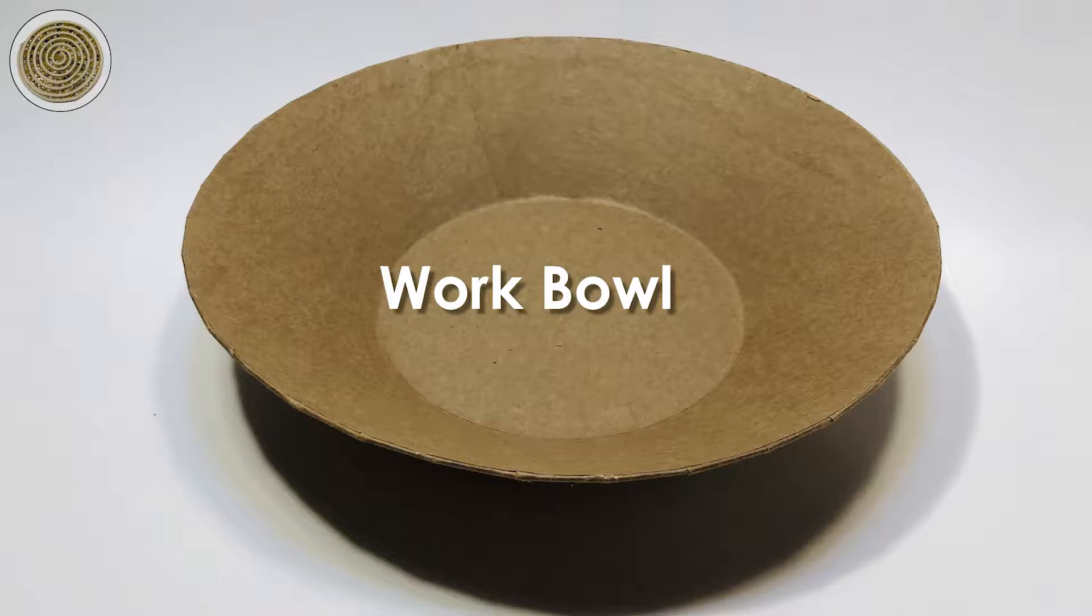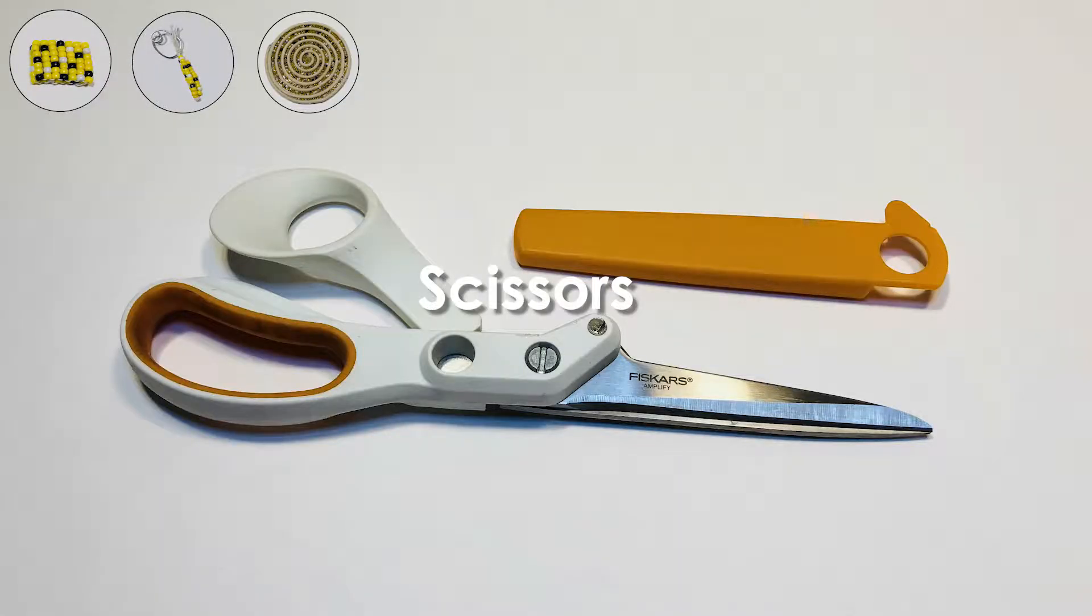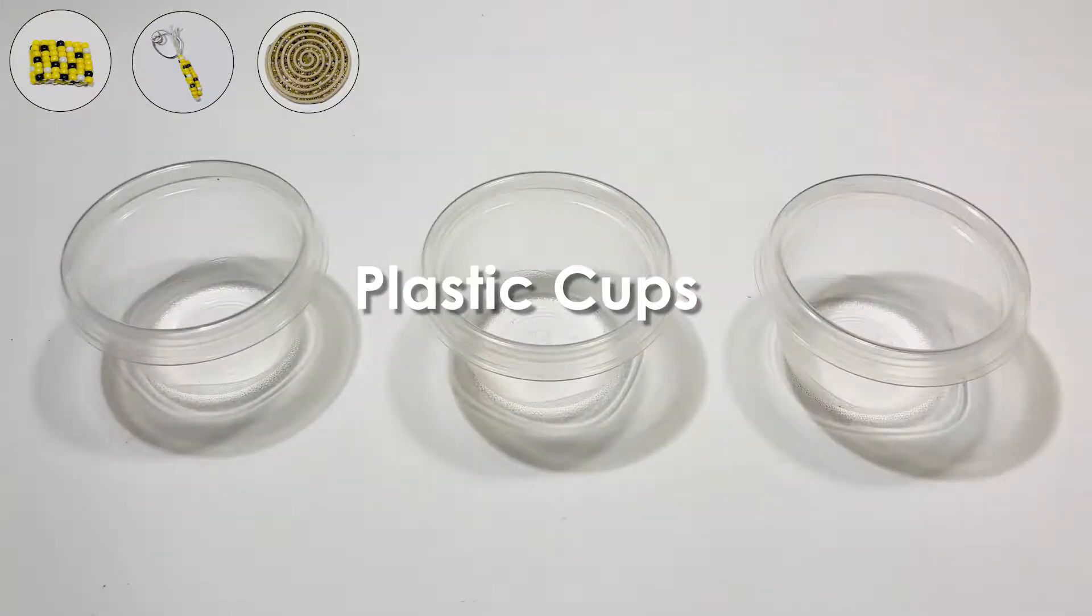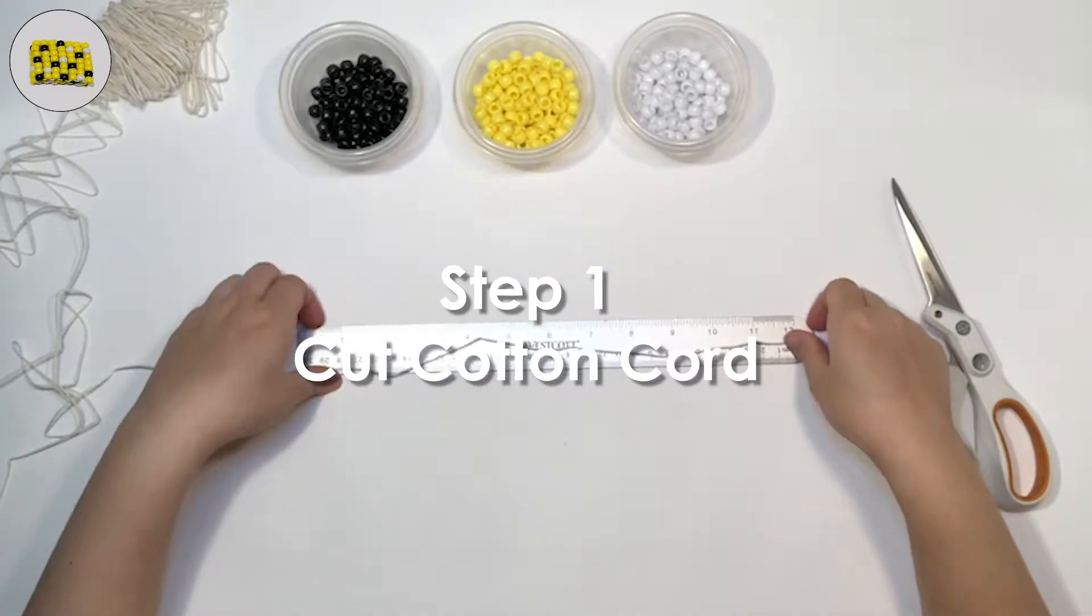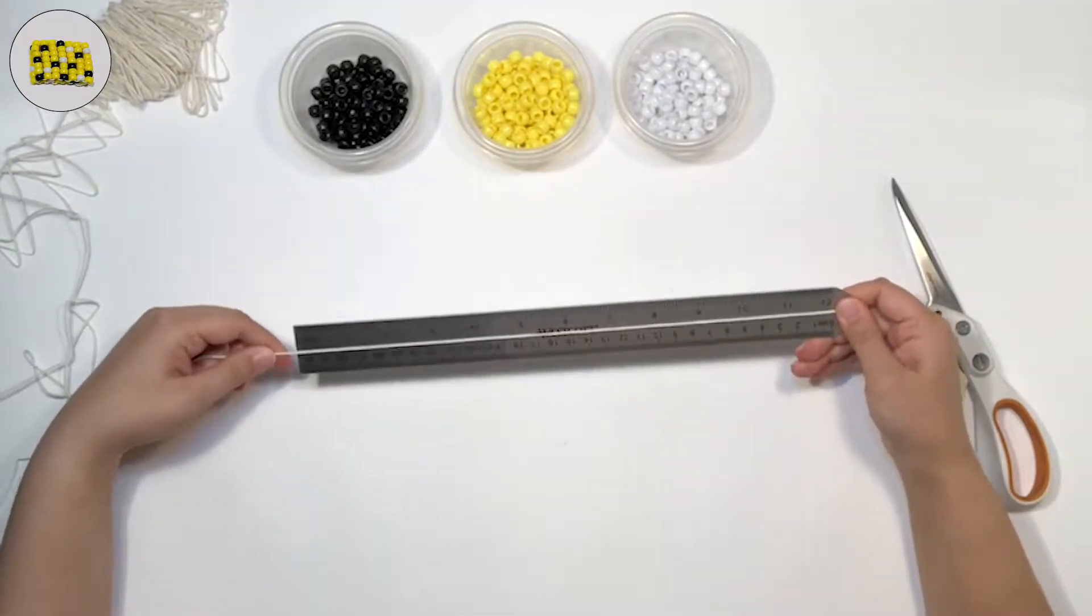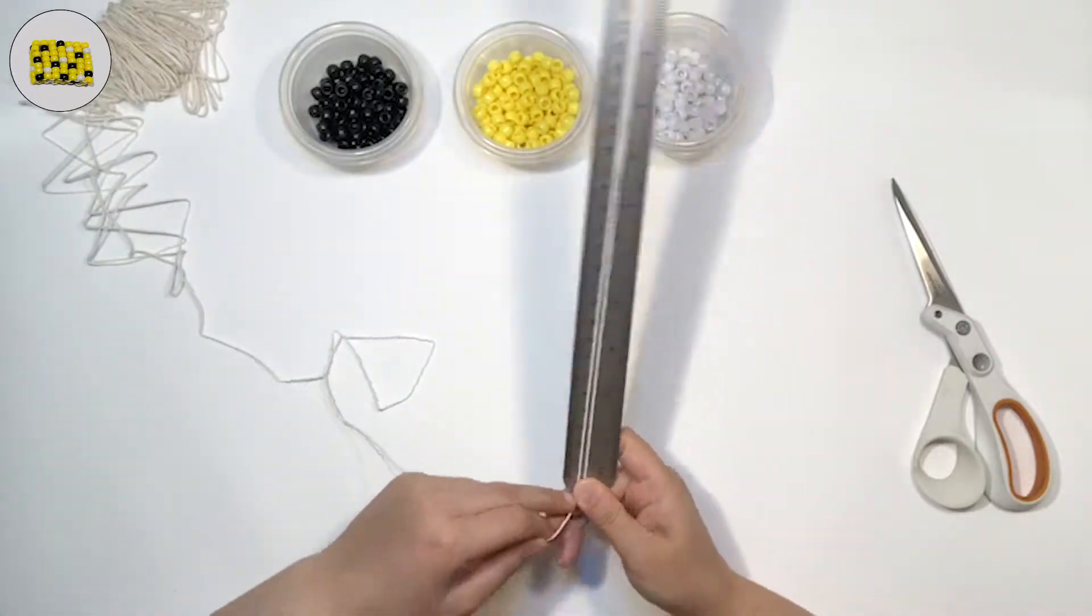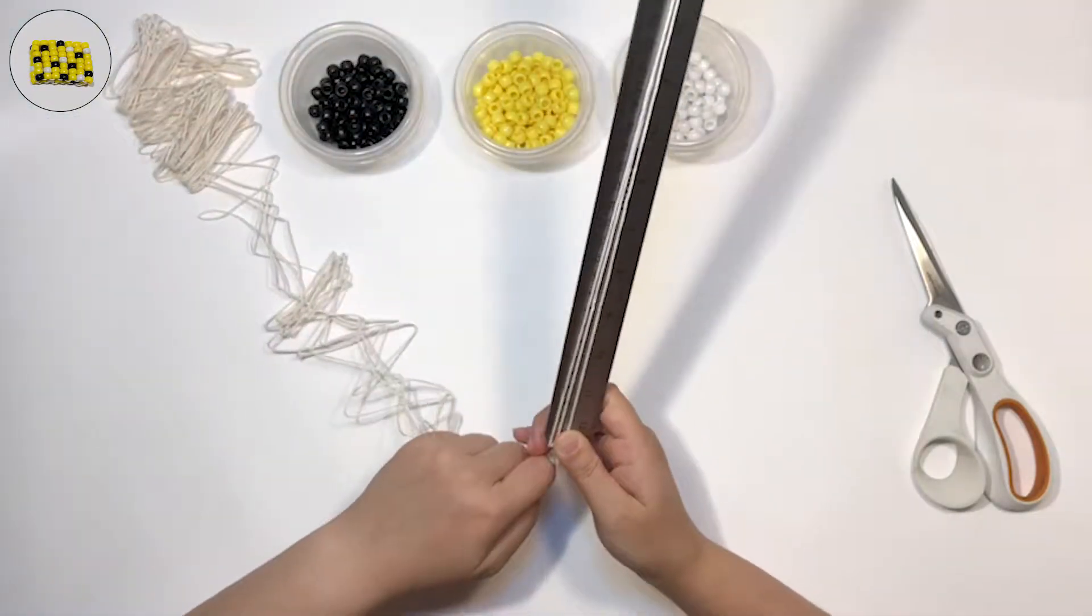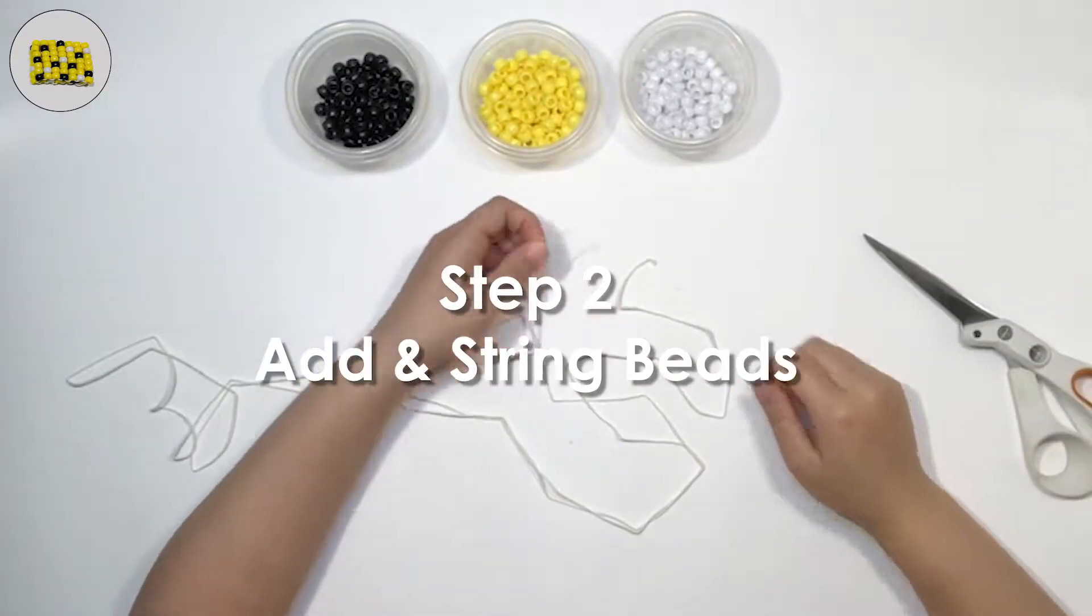Step one: cut the cotton cord. Spool out about six feet of thin cotton cord. I like to wrap it around a ruler to measure it out. Step two: add and string beads. Randomly add seven beads to your cord.